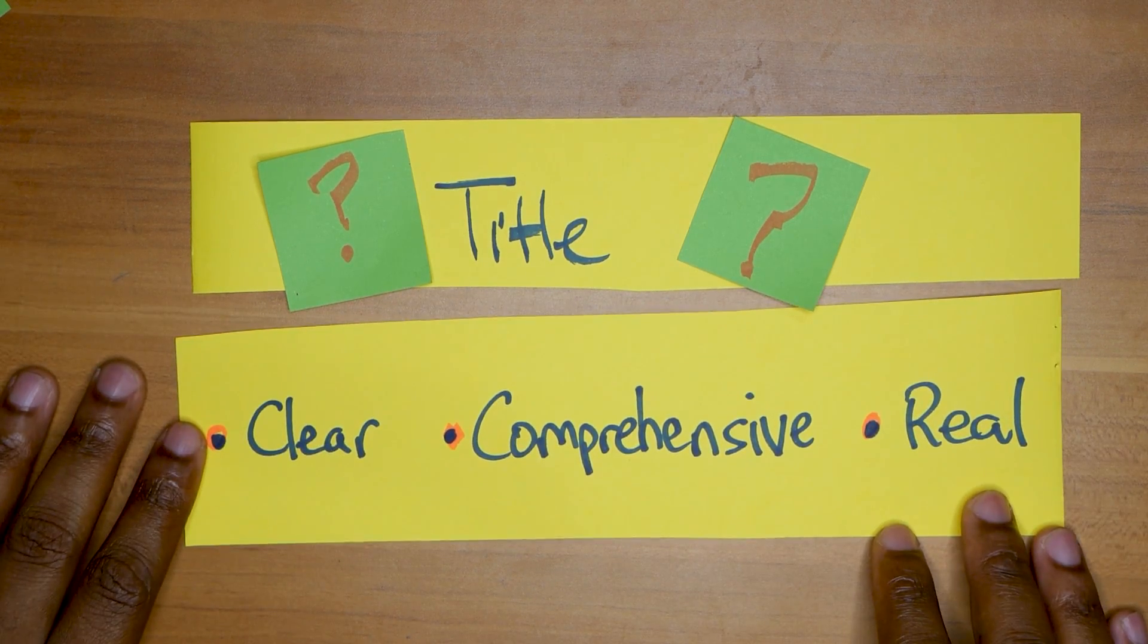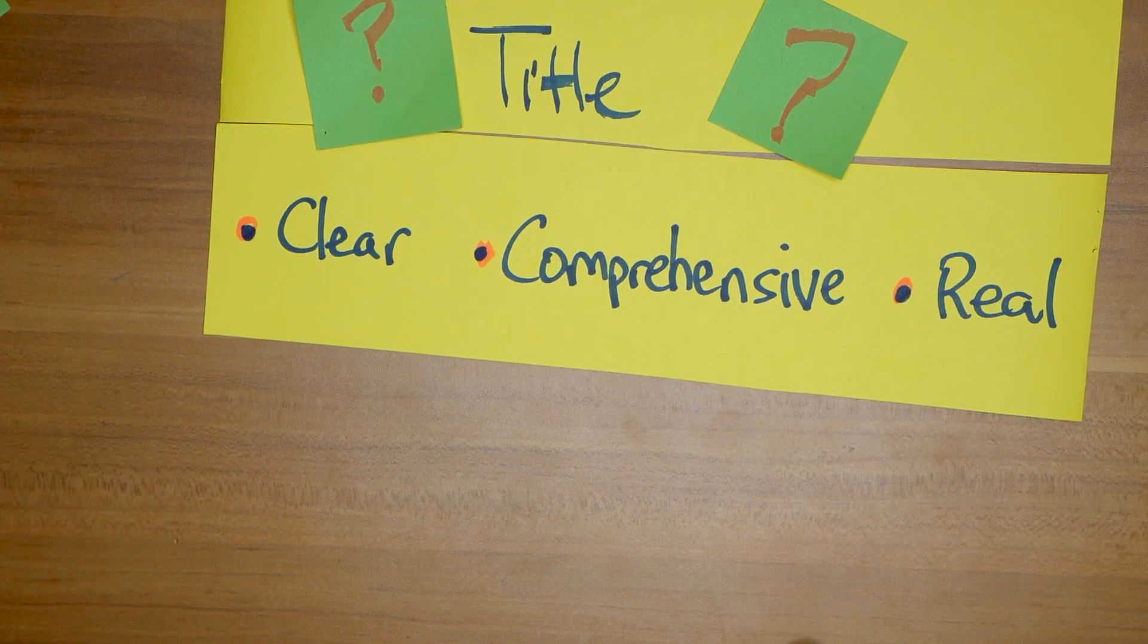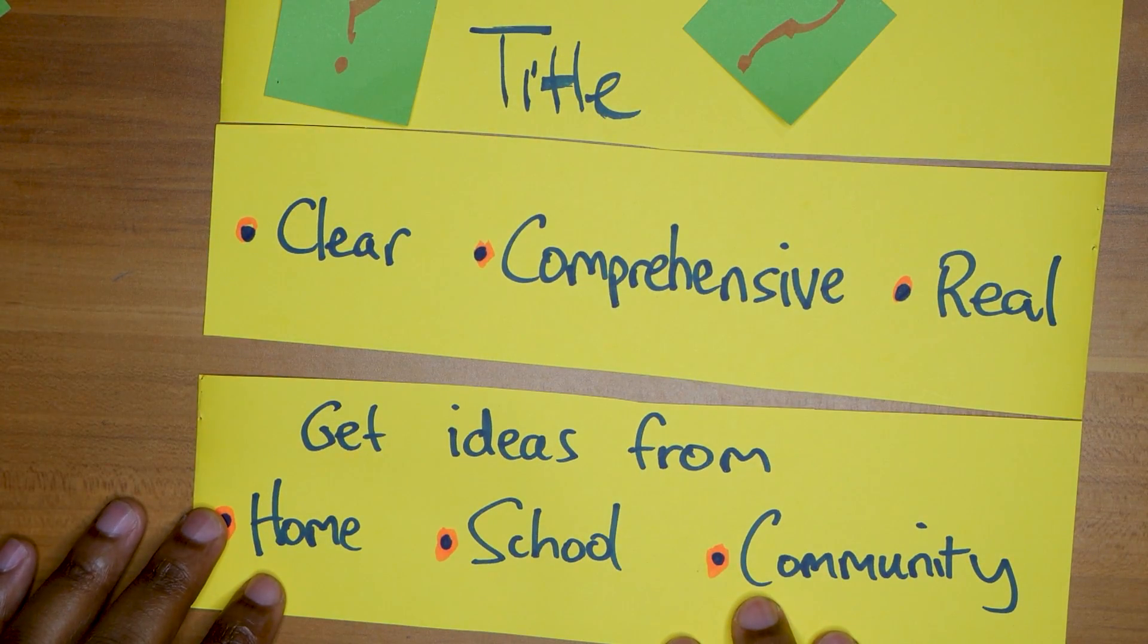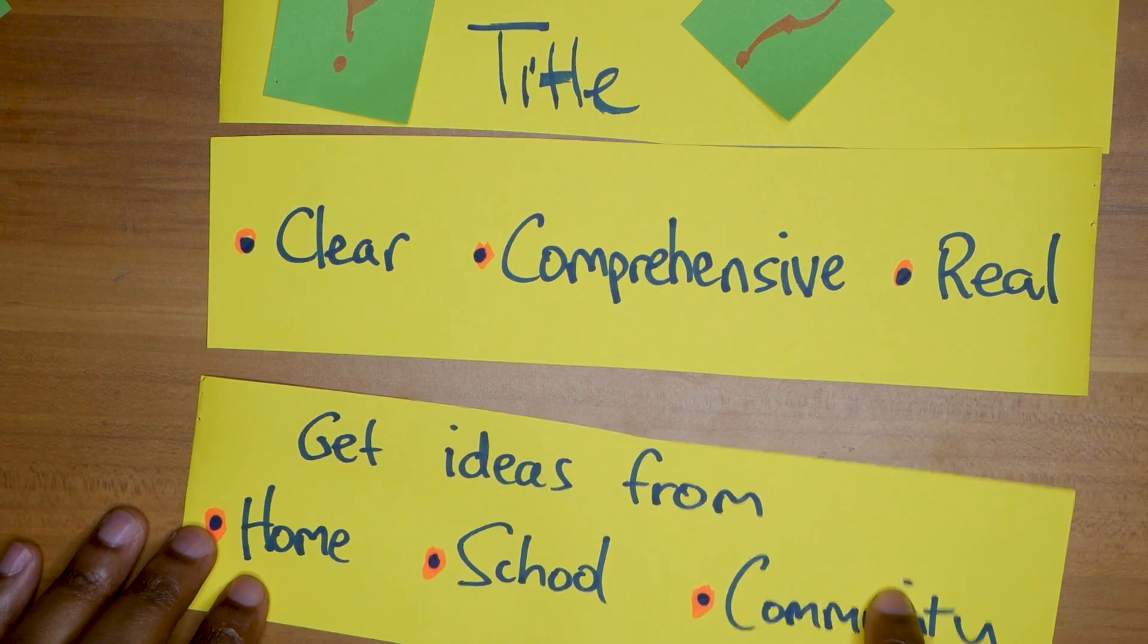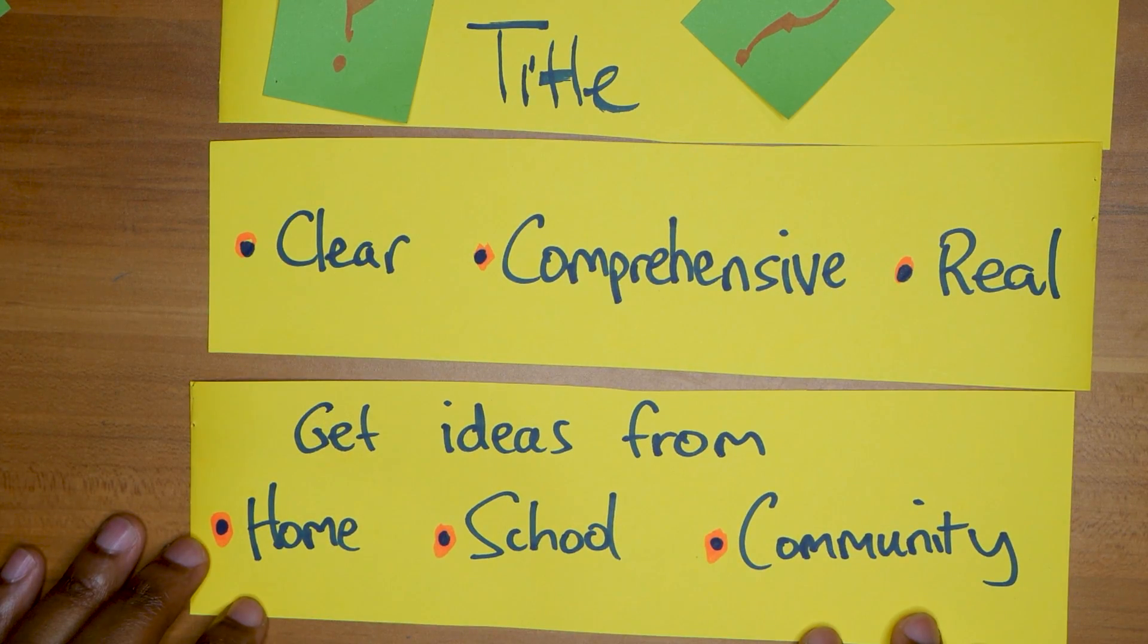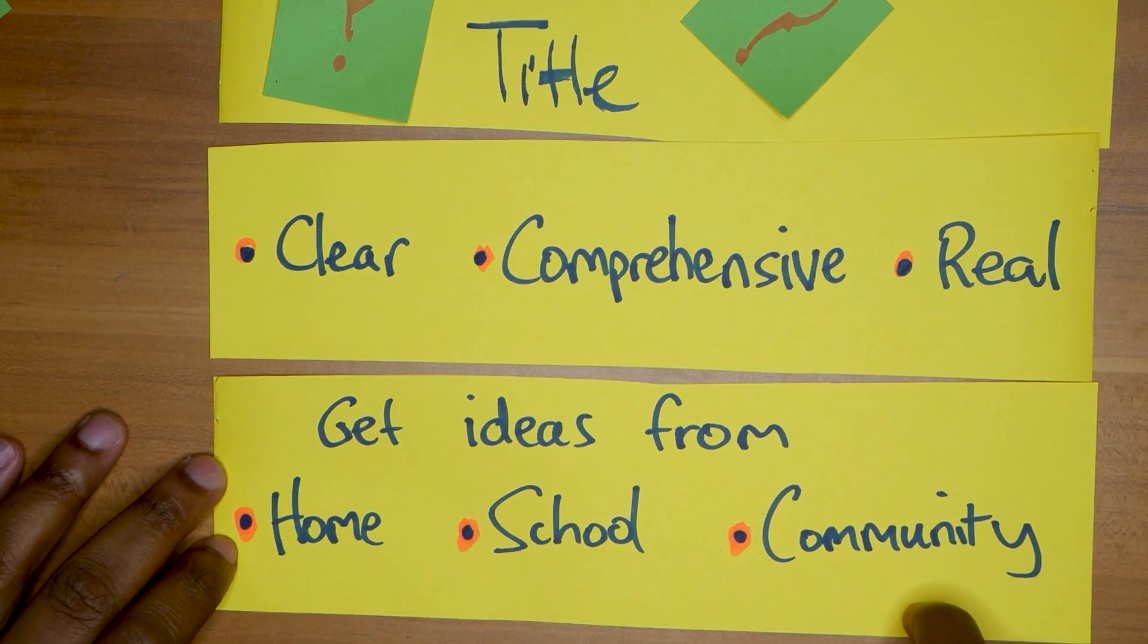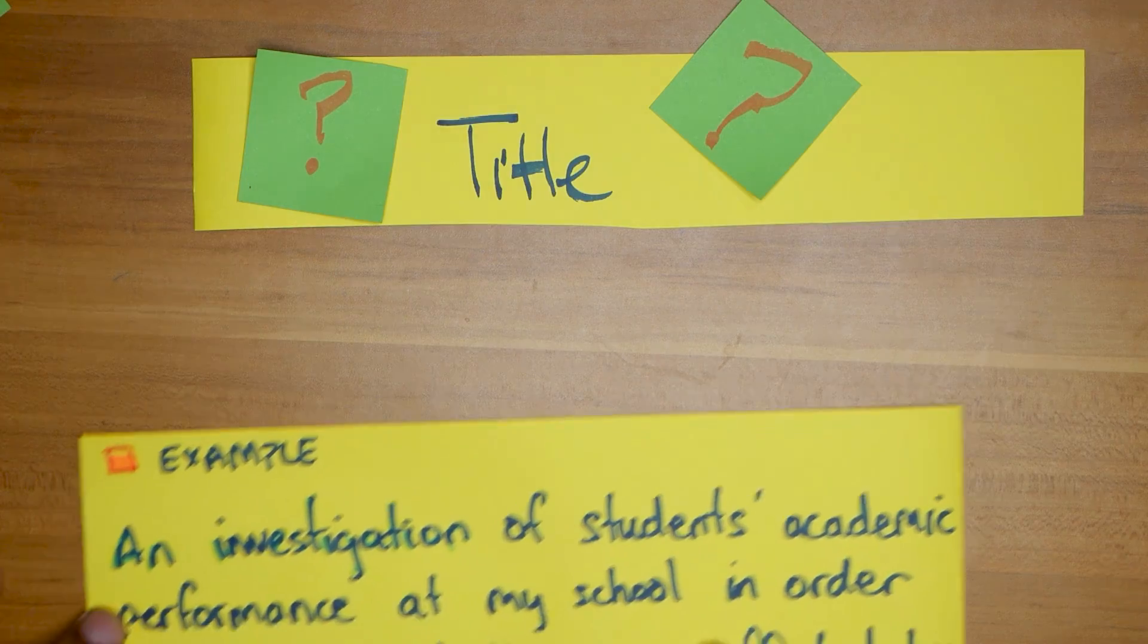Use something that's real. It should be comprehensive, which means you have a clear, clean idea of what you want to do in the project. You can get ideas from home, school, or community. These are the three things I tell students to get ideas from. In this video I'll give you actual ideas of each of these you can use.